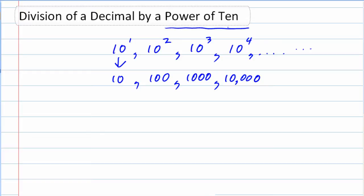So this is what we are dividing by. We start off with a decimal, a decimal being divided by one of these things: 10, 100, 1,000, 10,000, etc.